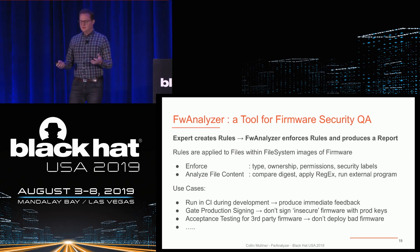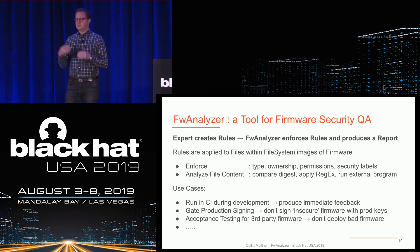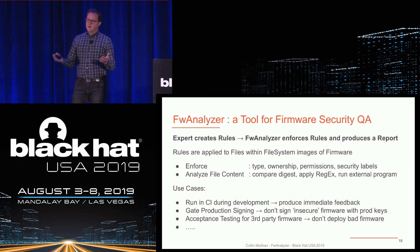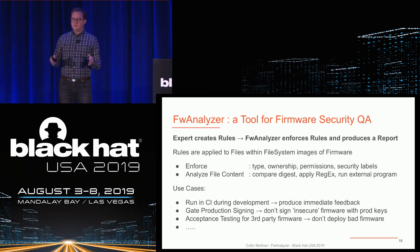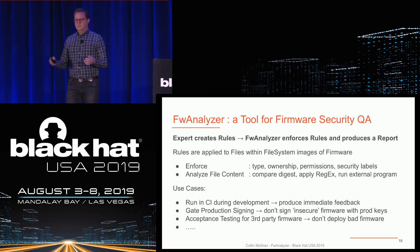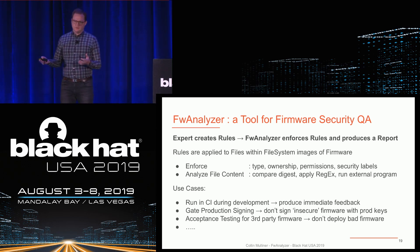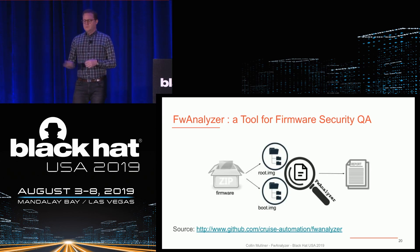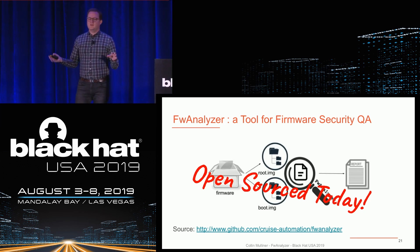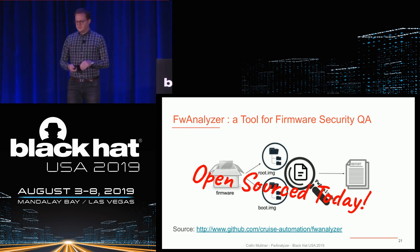The big use cases are: you want to run it in CI so that on every build you look at the firmware and can flag problems — developers can't get their PR merged if you find things. And of course, in all modern devices you have signed updates and secure boot, so you really want to prevent signing bad firmware. You put a tool like this in front of your production signing system and you only sign firmware that passes. And things like acceptance testing — if you buy products from third parties, you want to look at the firmware. We open-sourced this today. It's a completely open-source tool; we take PRs.